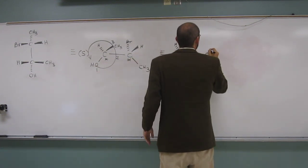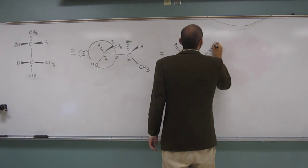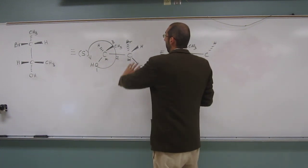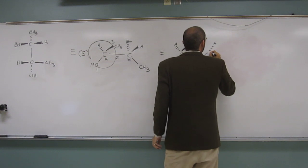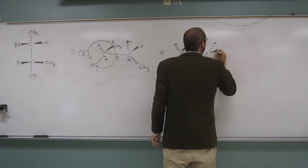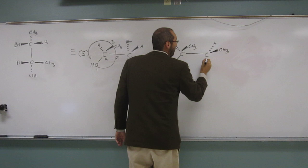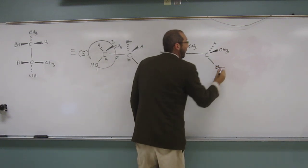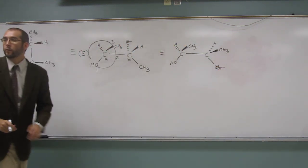So then when we rotate it again, we get the hydrogen in the back, like that. The methyl group forward in the front, like that, and the bromine on the bottom like that.